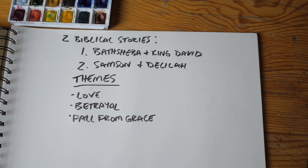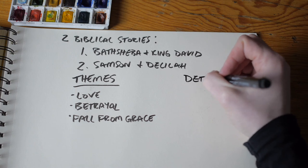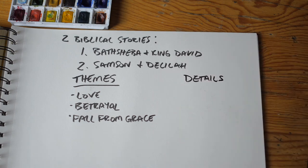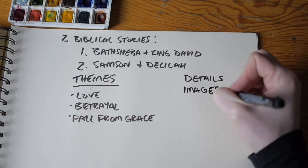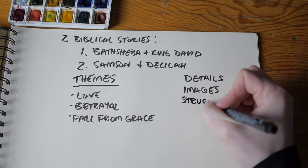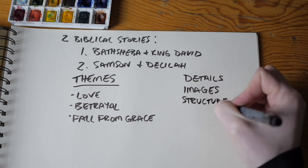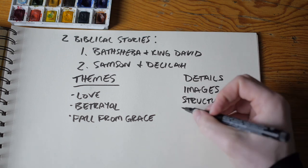All songs deal with the same handful of universal themes. What makes some lyrics more powerful than others is not their thematic novelty, but rather their details and carefully constructed images, along with their poetic structure and the manner in which the lyrics are conveyed.